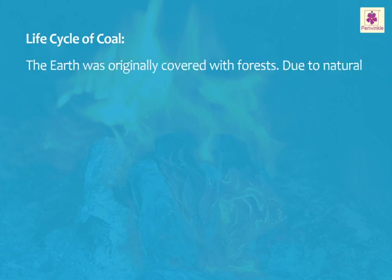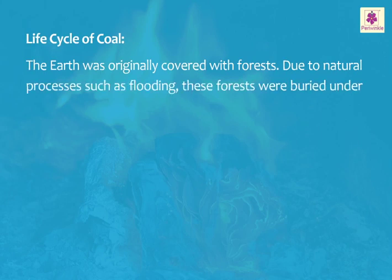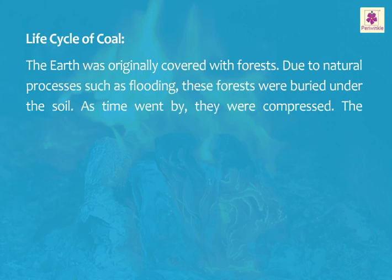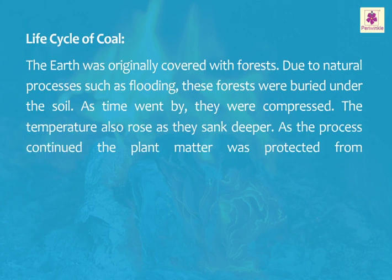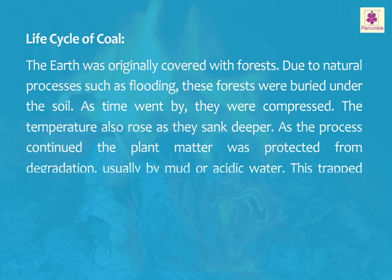Life cycle of coal. The earth was originally covered with forests. Due to natural processes, such as flooding, these forests were buried under the soil. As time went by, they were compressed. The temperature also rose as they sank deeper. As the process continued, the plant matter was protected from degradation, usually by mud or acidic water.